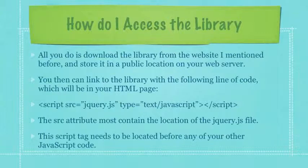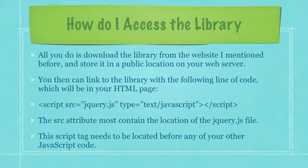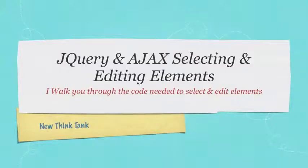You then link to the library with a script tag in your HTML page. The source attribute must contain the location of the jQuery.js file, and this script tag needs to be located before any of your other JavaScript code. In the next tutorial I'm going to show you how to select and edit elements in your web page using jQuery and Ajax functions.